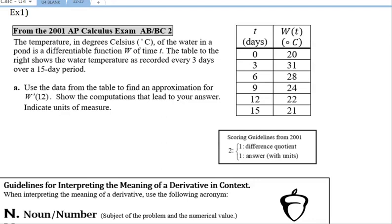It says use the data from the table to find an approximation for W prime of 12. So W prime means we're finding the derivative of W at T equals 12. And we're looking for an instantaneous rate of change. Well, we don't have an equation for W, but we are approximating. We've been doing this with tables before, we are going to find the average rate of change over a small interval, and that will represent or approximate the instantaneous rate of change at a point that is on that interval.